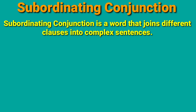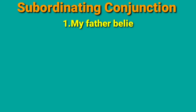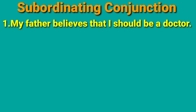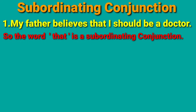Let us see with examples. First example: my father believes that I should be a doctor. In this example, there are two sentences. The first sentence is 'my father believes' and the second sentence is 'I should be a doctor.' The connective word between the two sentences is the word 'that.' So, the word 'that' is a subordinating conjunction.